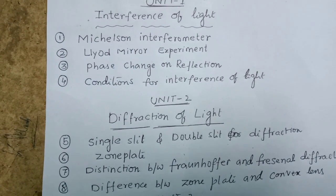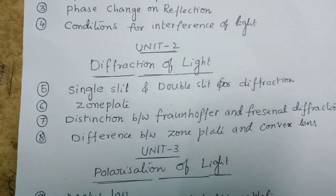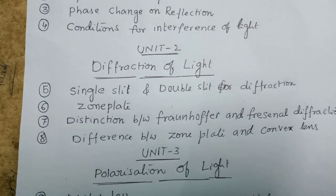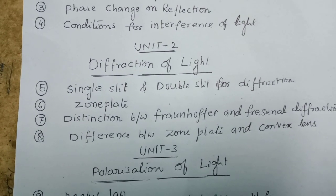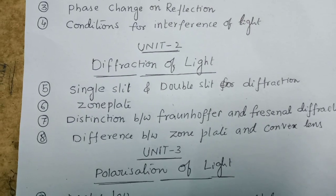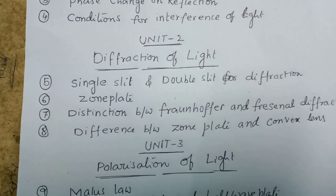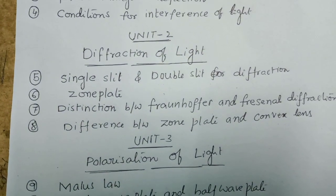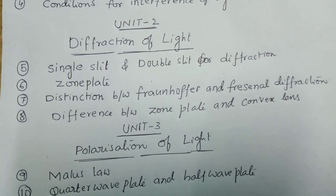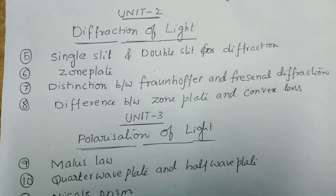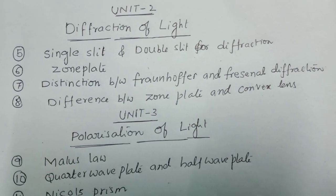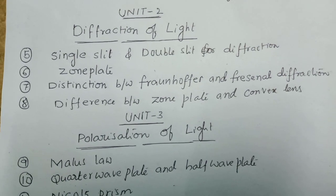In Unit 2 Diffraction of Light: diffraction due to single slit, diffraction due to double slit, zone plate, distinction between Fraunhofer and Fresnel diffraction, and differences between zone plate and convex lens. These are the important questions for Unit 2.